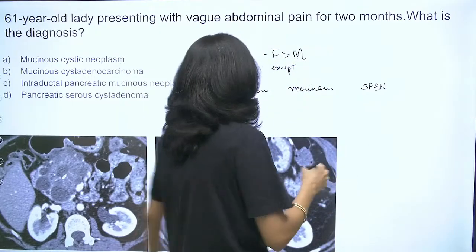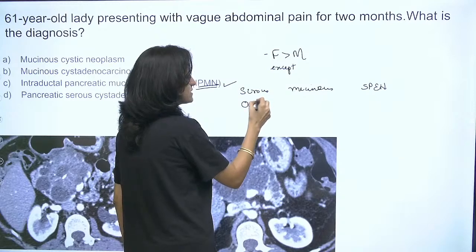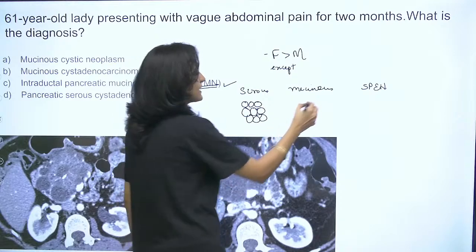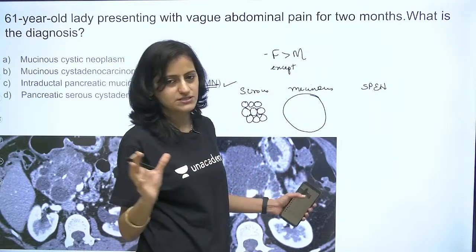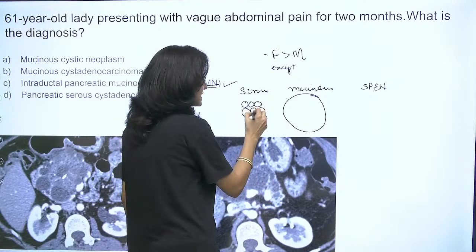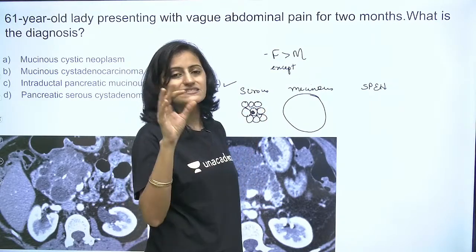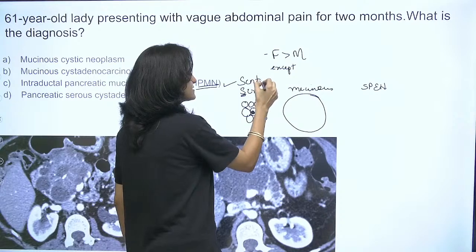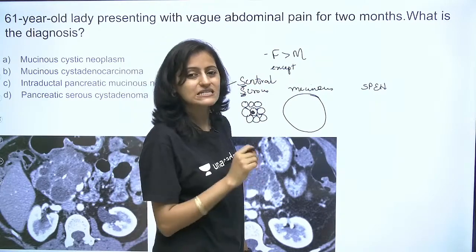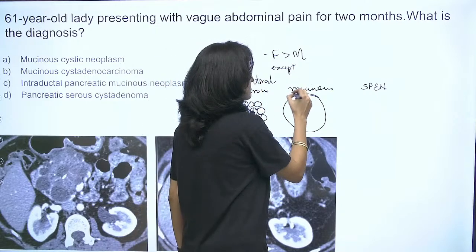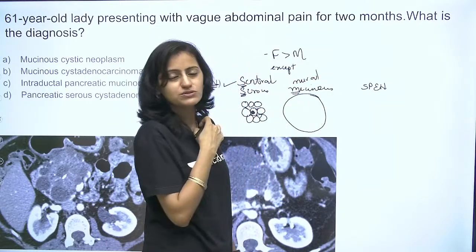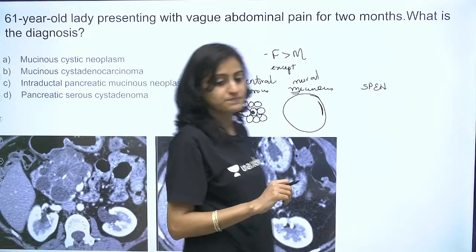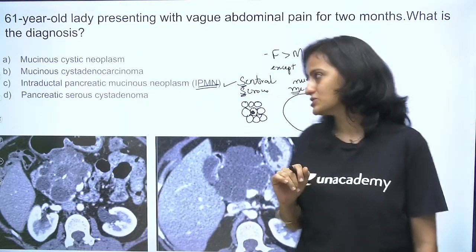Radiologically, serous is microcystic — giving a bunch of grapes appearance. Mucinous is generally a unilocular large cyst. For calcification: serous has central sunburst calcification — remember 'S for central.' Mucinous has mural, meaning peripheral, calcification.